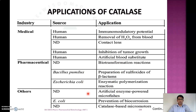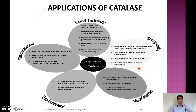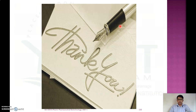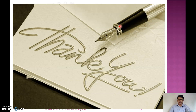Other uses include artificial enzyme powders, microfiches, prevention of bio-corrosion, and catalase-based micromotors. These are the different applications of catalase enzyme in food industry, therapeutics, environmental, and pharmaceutical applications. That concludes the discussion on catalase production and applications.